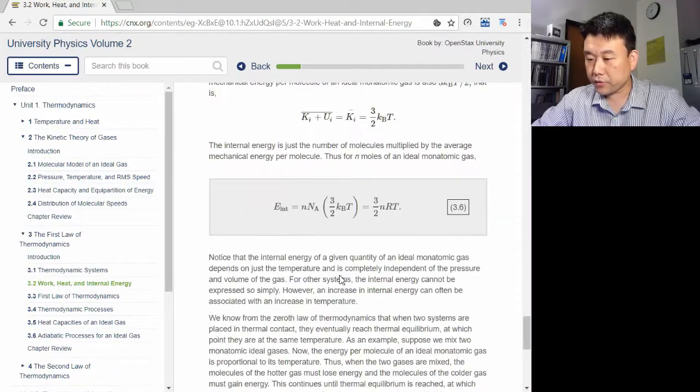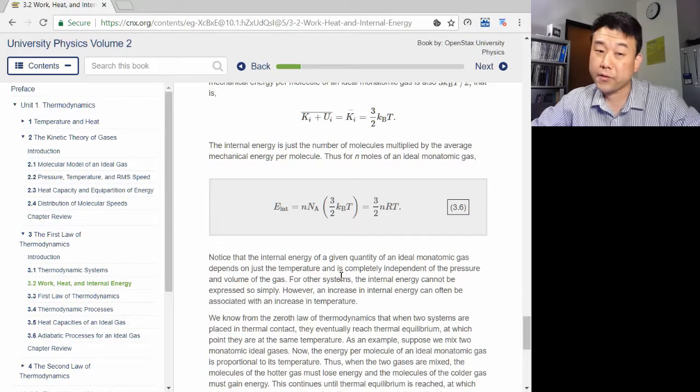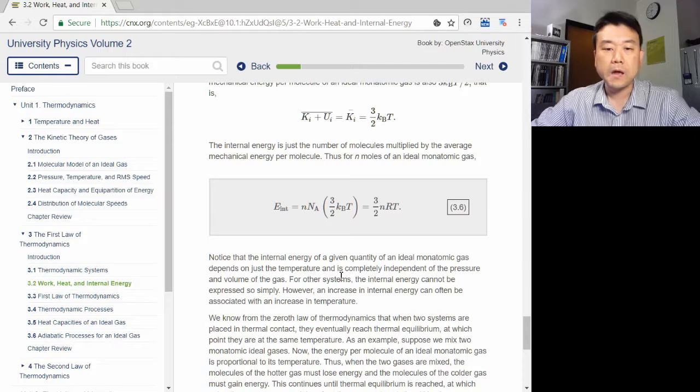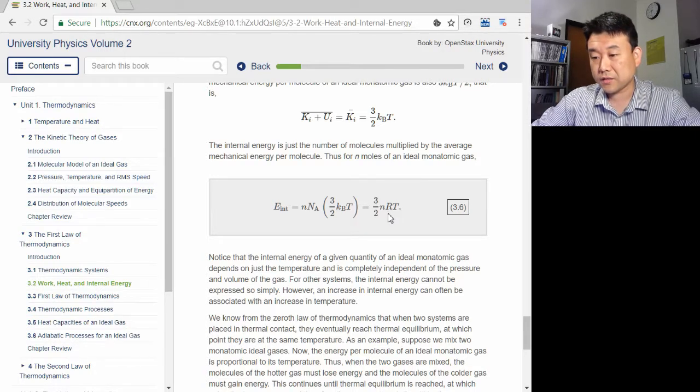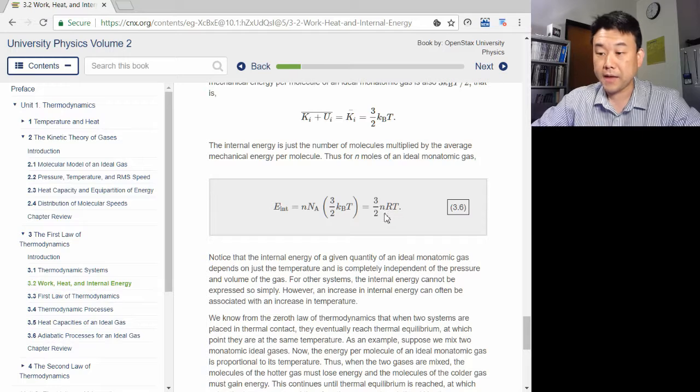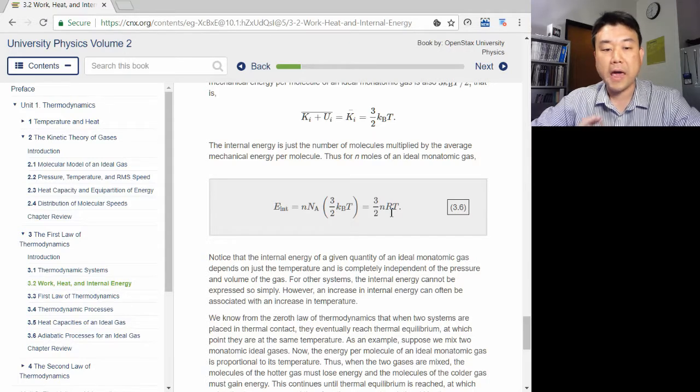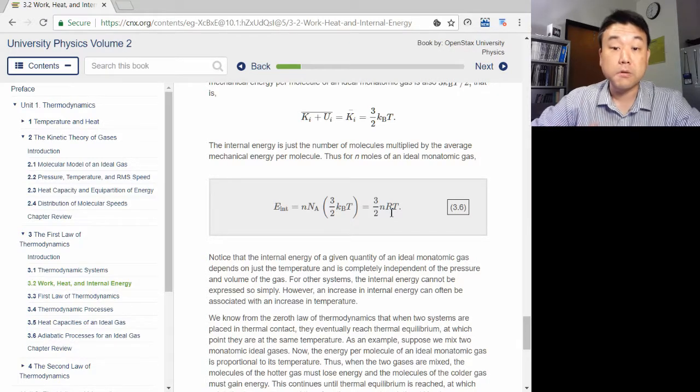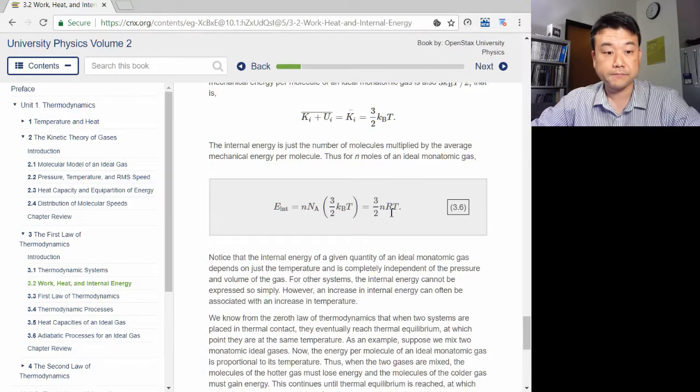By the way, one thing important for my class: we are not going to use R, gas constant, or Avogadro's number, or mole. When you see equations in a textbook that uses gas constant, for example, n times R, you can replace it with capital N times k sub b, that is number of molecules times Boltzmann's constant.